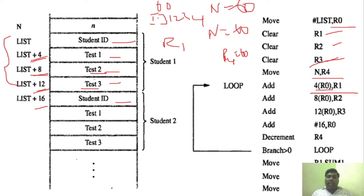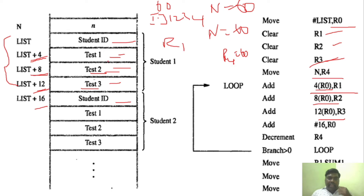You can see here: 4 into R0 is nothing but test 1, 8 into R0 is test 2, and 12 into R0 is test 3. The values in R1, R2, and R3 are accumulated — R1 is added for test 1, R2 is added for test 2, and R3 is added for test 3.